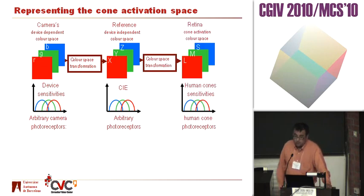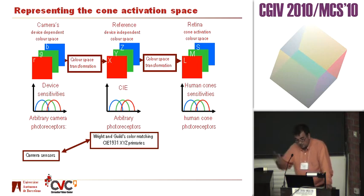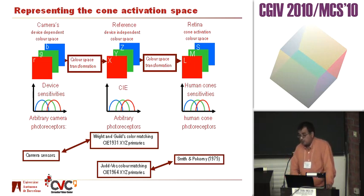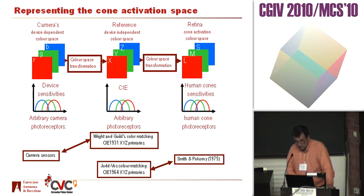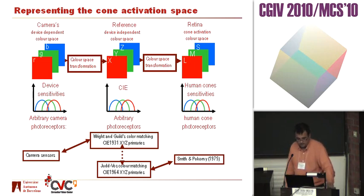And then another transformation to transform it into human cone sensitivities. For example, camera sensors — you want to transform them into CIE 1931 primaries, which are based on the Wright-Guild color matching functions. The common photoreceptors used in the literature are combined to make color opponent channels — the Smith and Pokorny, which are related to the Judd-Voss color matching functions. There isn't an exact transformation between these two; you can transform individual wavelengths, but you cannot transform the whole thing.